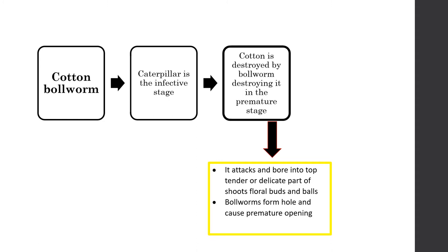What exactly happens? It attacks and bores into top tender and delicate parts of shoots, floral buds, and bolls. Bollworms form holes and cause premature opening of the cotton.